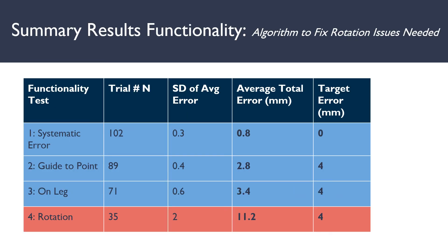A summary of our Functionality Test results is shown here. For Test 1 systematic error, when we tried to revisit a marked point on the table, we saw an average total error of 0.8 millimeters. For Test 2, we were guided back to target points using the GUI alone, and saw an average error of 2.8 millimeters, below our threshold of 4 millimeters for intra-rater reliability. We then tried this on a leg to use the GUI to guide us back to target points on the leg, and saw an average total error of 3.4 millimeters, still below the threshold. Finally, we introduced rotation of the probe when going back to target points and saw a spike in the average total error, indicating that we must fix the algorithm to account for rotation issues.